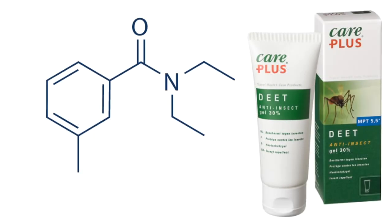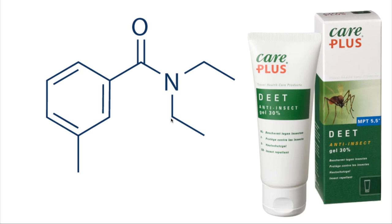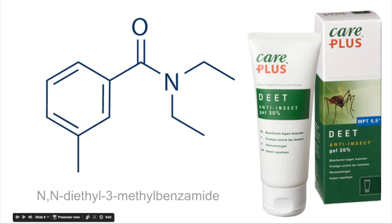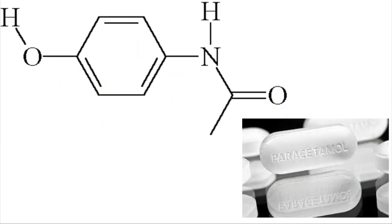For everyday examples, this amide is found in insect repellent. On the N we've got two carbon groups, so this is a tertiary amide. The carboxylic acid part relates to benzoic acid, but we've got a methyl group on carbon three, so this would have been 3-methyl benzoic acid — it's actually 3-methyl benzamide. On the N we've got two ethyl groups, so it's called N,N-diethyl 3-methyl benzamide.